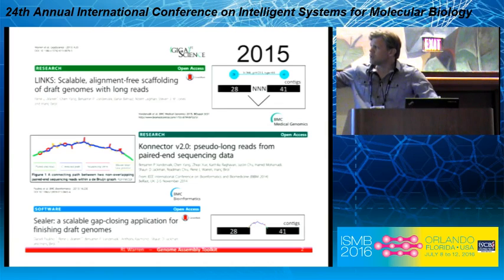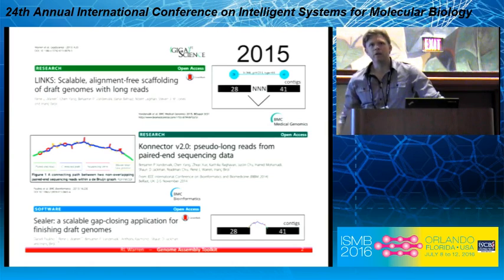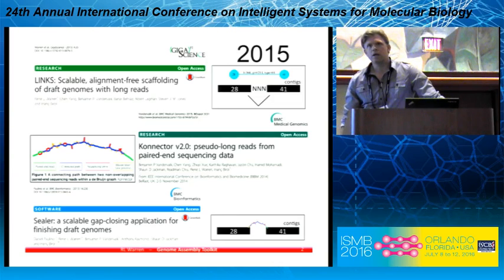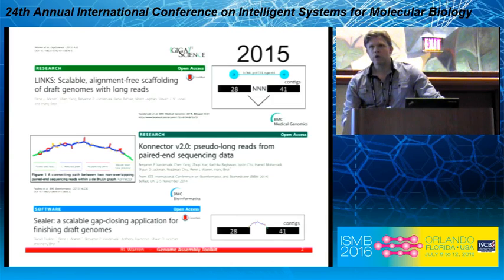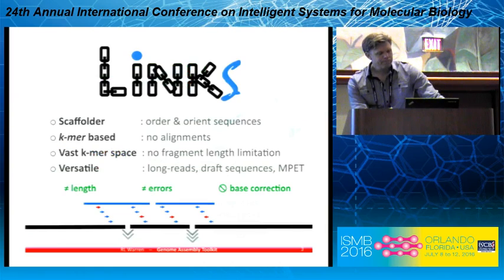In the lab of Inage Burrell. Notably, sealer, which is an automated gap filler for genome assemblies, which uses the connector assembly engine. Connector implements the Bruin graph balloon filter. I'll talk briefly about that as well.